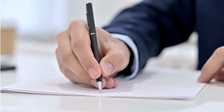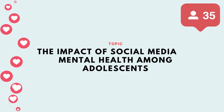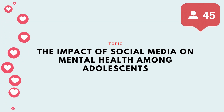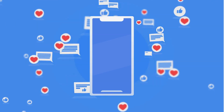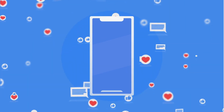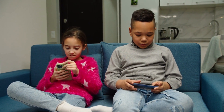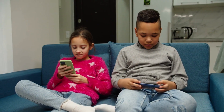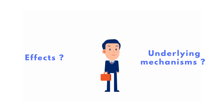We will complete this discussion with another example. Suppose the topic is the impact of social media on mental health among adolescents. Here, the research problem will be that the widespread use of social media platforms among adolescents has raised concerns about its potential impact on their mental health. However, the specific effects and underlying mechanisms of this relationship are still unclear.